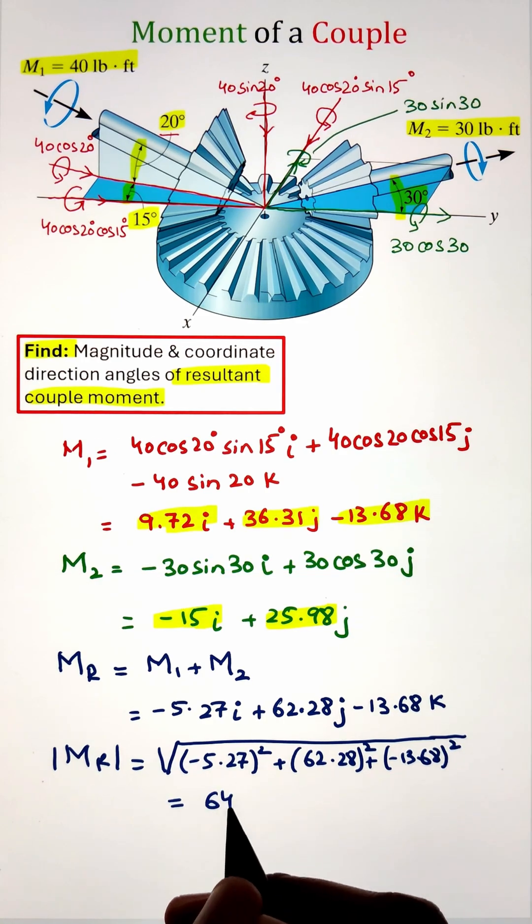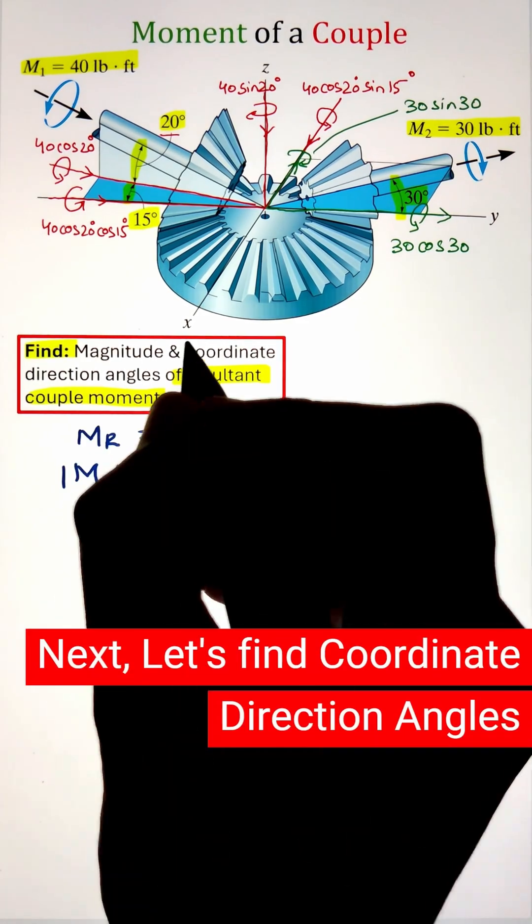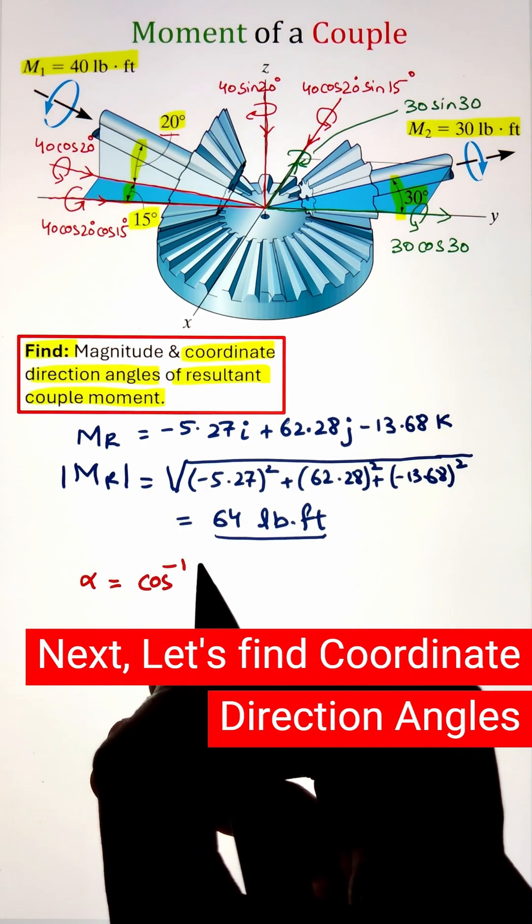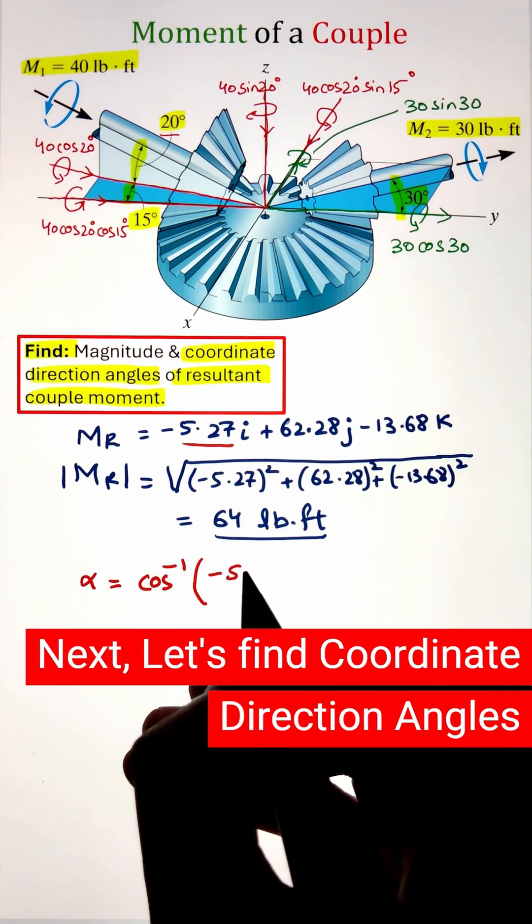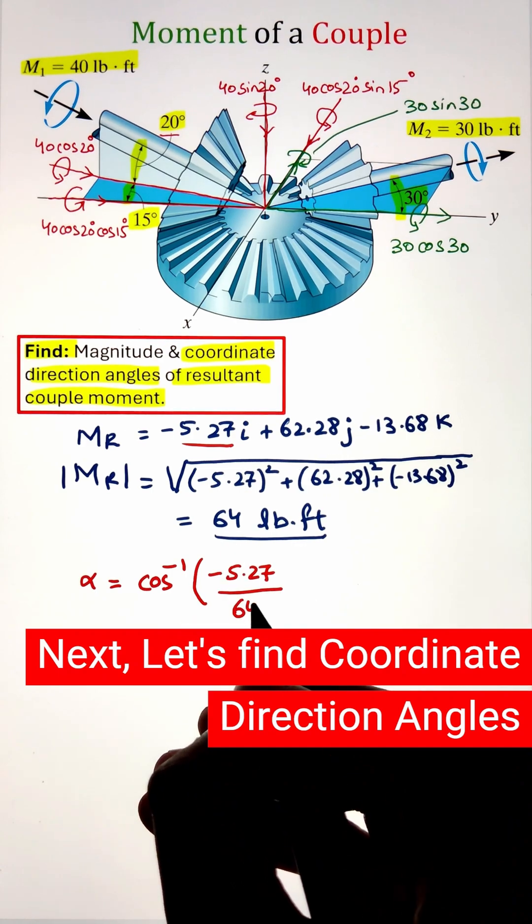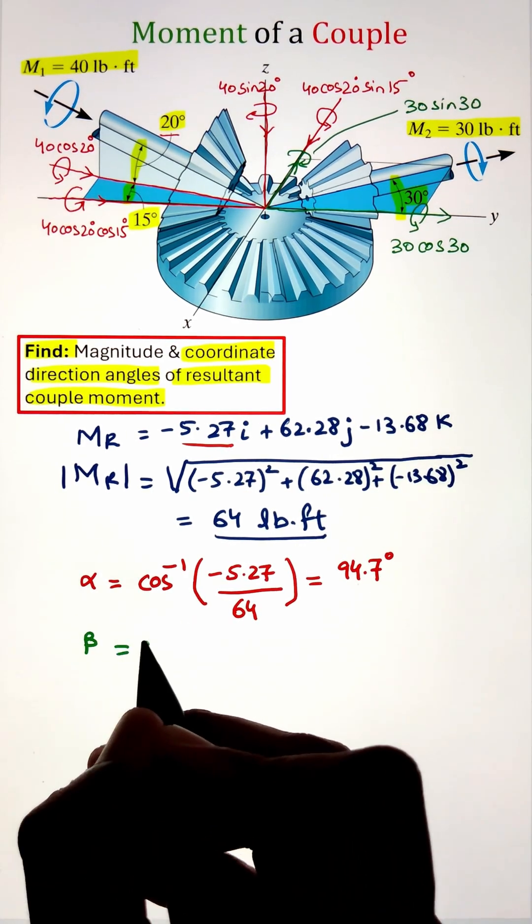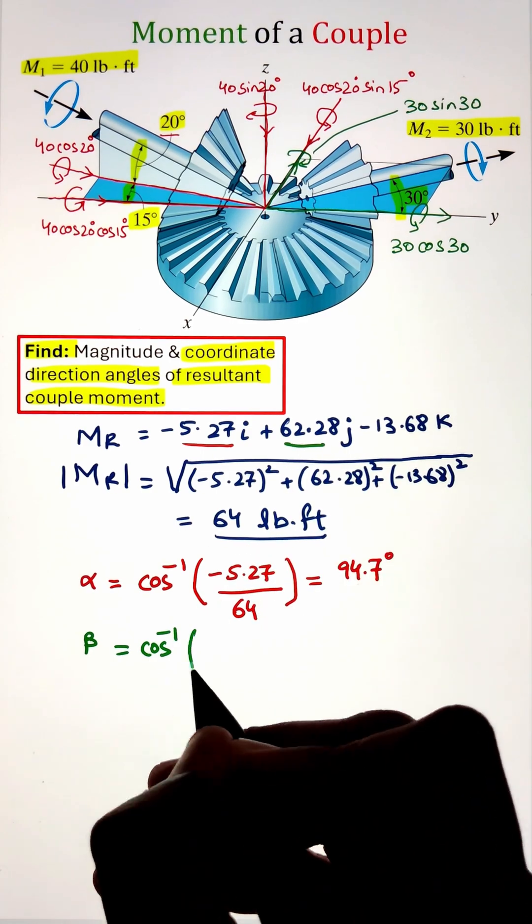Now, once we have the magnitude, let's identify the coordinate direction angles the resultant couple moment is making with respect to x, y, and z-axis. So to calculate with respect to x-axis, we have our alpha that equals cos inverse of the x component of the resultant couple moment divided by its magnitude. That gives us an angle of 94.7.